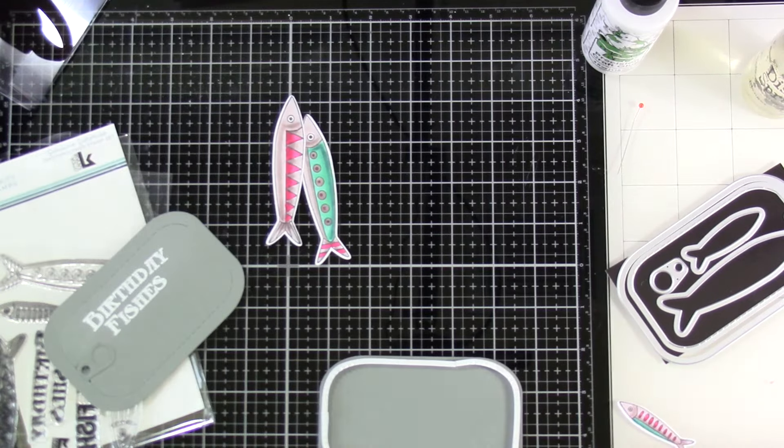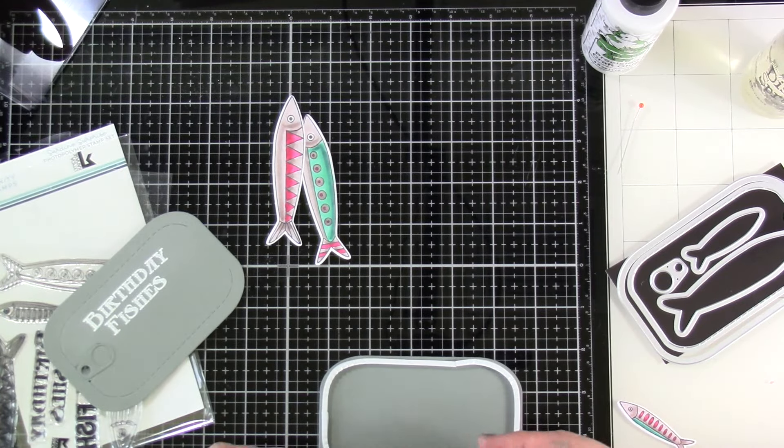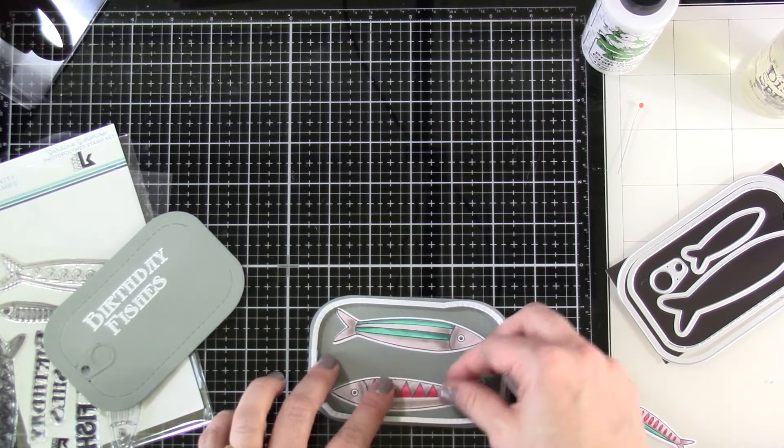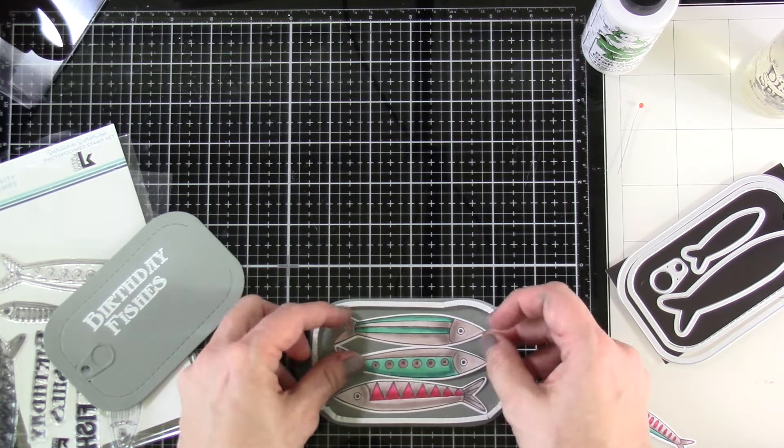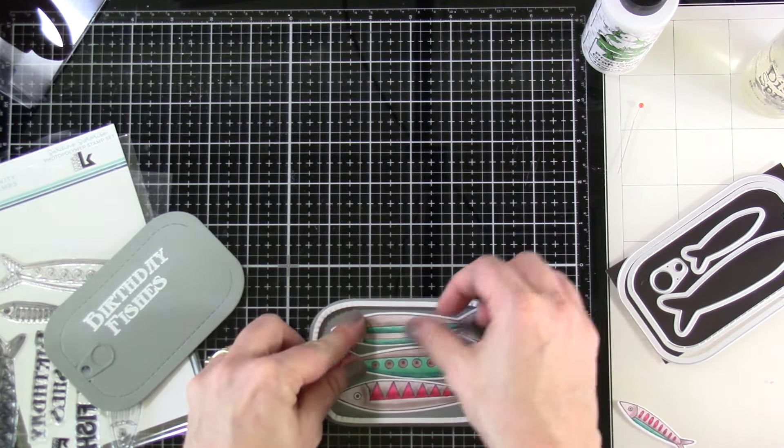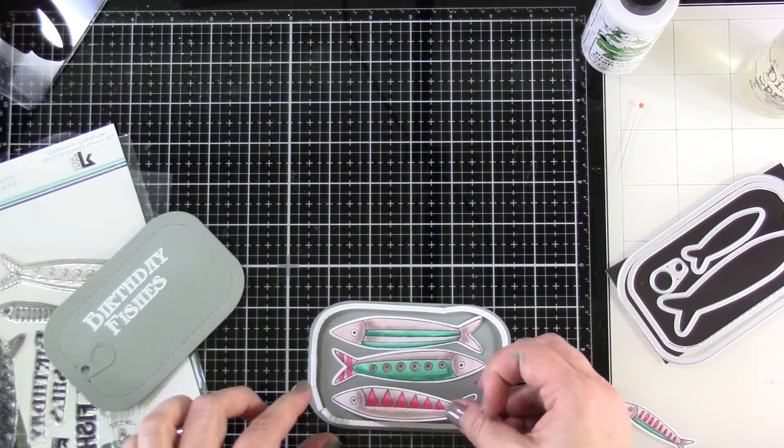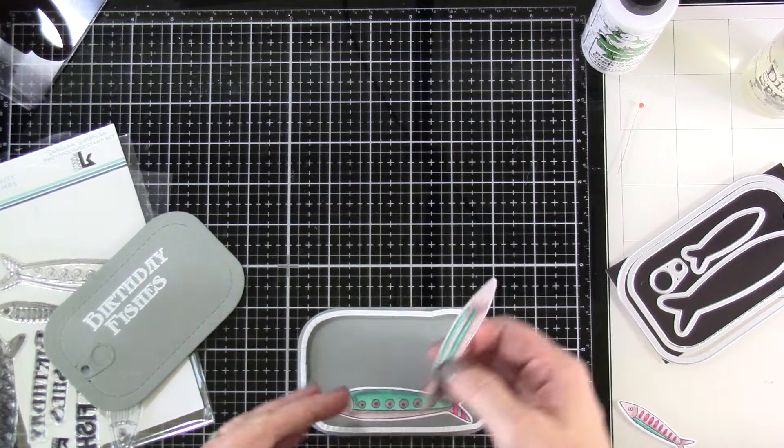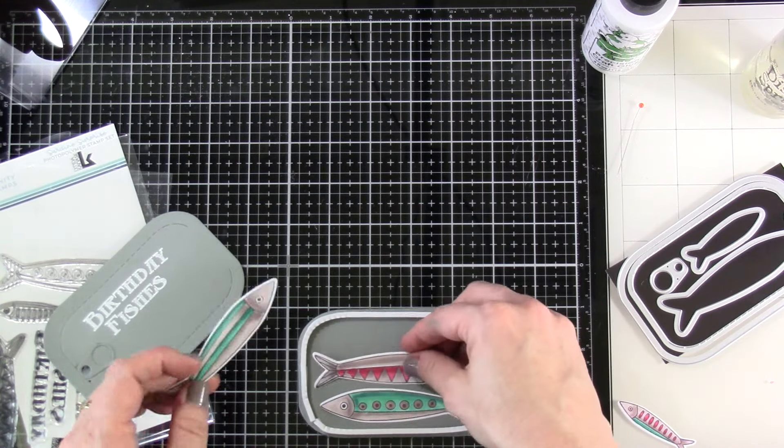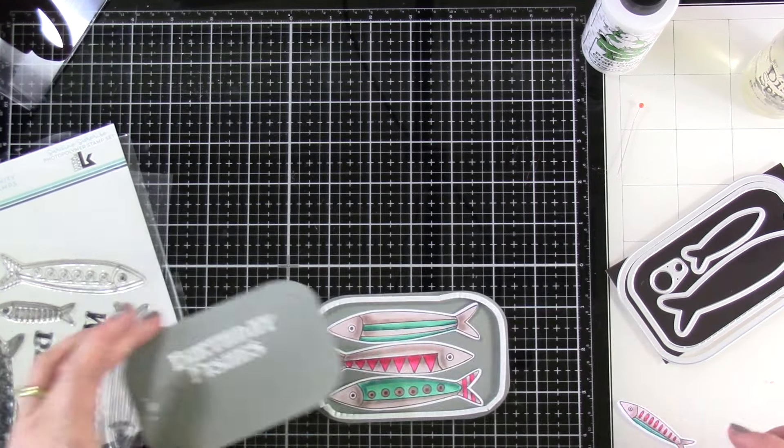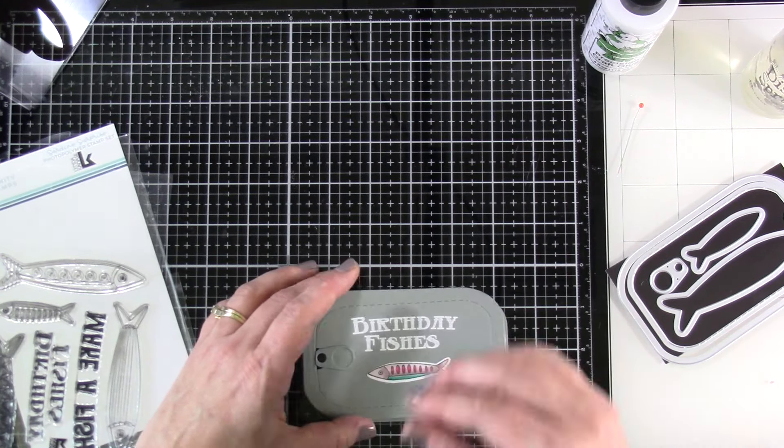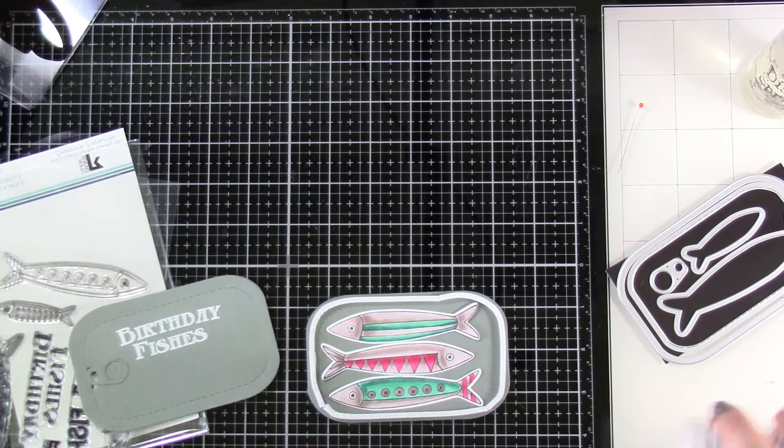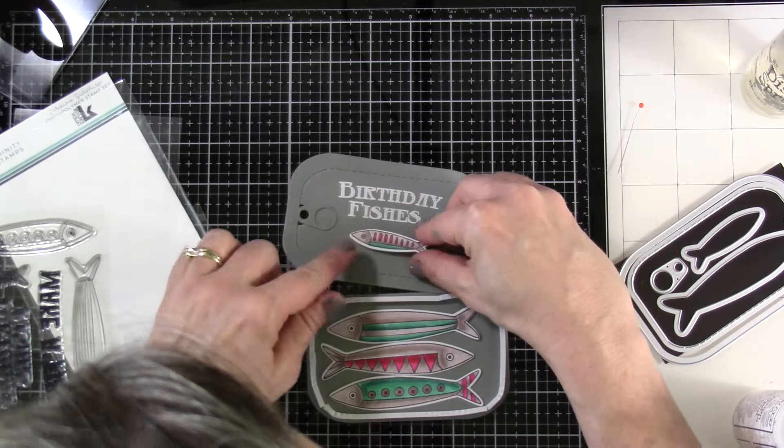I do put the fish in there kind of playing around with how I want those to look. I don't even know that I actually attached them. I'm telling you I was already in vacay mode and that's where we were. So you're going to want to attach those down or not. You do you right? Attach those down and then make sure to put your gift card in there as well before you actually attach the top.